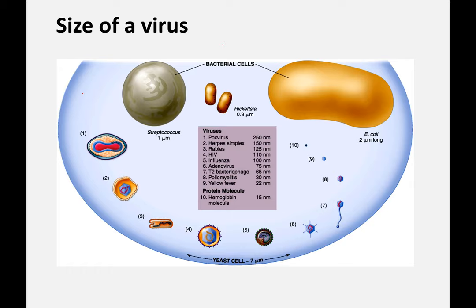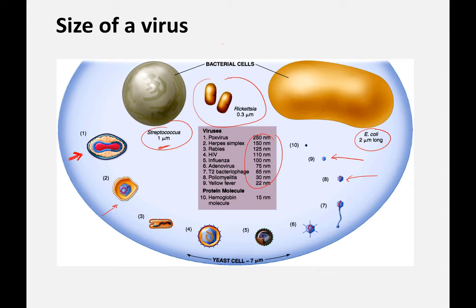Viruses are also very small. Here you can see E. coli and Streptococcus — two very common bacteria. Then we have the big pox virus, like smallpox and vaccinia, all the way down to yellow fever and polio, which are much, much smaller. Bacterial cells are in the micrometer size range, except for organisms like rickettsia — but there are always exceptions in biology to every rule.